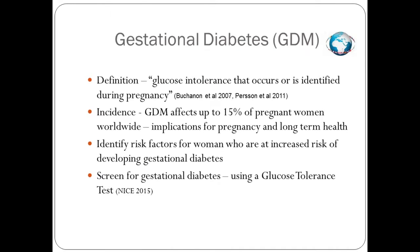Gestational diabetes is glucose intolerance that occurs or is identified during pregnancy. It is often a result of insulin resistance caused by placental hormones, which lead to increased blood glucose levels in the mother's blood.